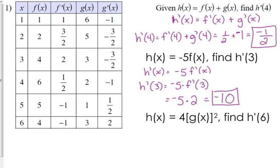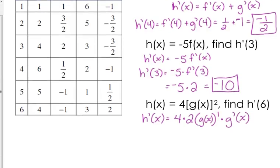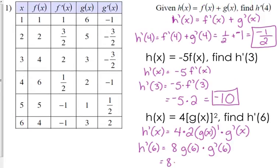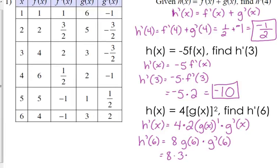The last definition for h of x is 4 times g of x squared. We've got a scalar multiple of 4 and we've got the power chain rule. So h prime of x is equal to 4 times — bring down the exponent, keep the function inside the same, subtract 1 from the exponent — and we've got to multiply by the derivative of the inside, which is g prime of x. 4 times 2 is 8. So h prime of 6 is equal to 8 times g of 6 times g prime of 6. g of 6 is 3, g prime of 6 is 2, so we've got 8 times 3 times 2 which is 48.